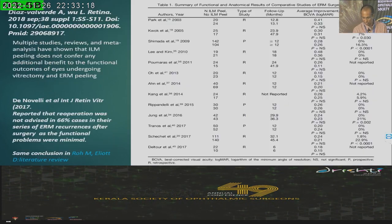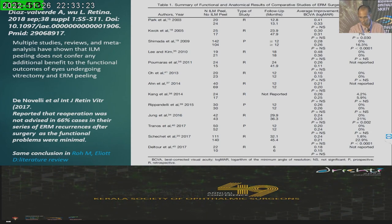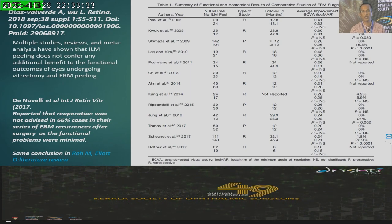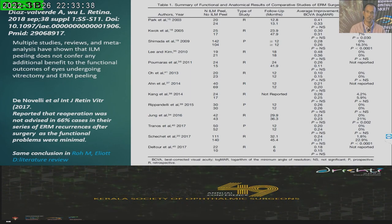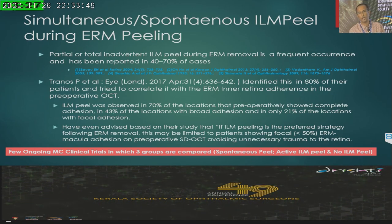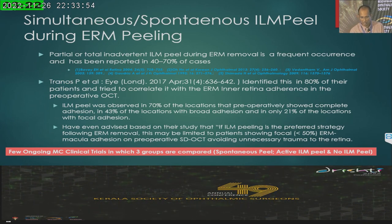All these studies have failed to conclude that there is a significant difference in long-term visual outcome whether you peel the ILM or not. This study covering 2003–2017 outlines no significant difference in visual acuity between double peel and single peel. Also, many recurrences are not significant enough to produce visual deterioration requiring re-operation. Sometimes some ILM also peels along with the ERM whether you want it or not. Tranos et al. proposed that ILM peeling, if done, may be limited to patients showing focal ERM macular adhesions of less than 50% on preoperative SD-OCT, to avoid unnecessary retinal trauma.